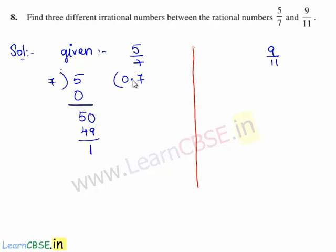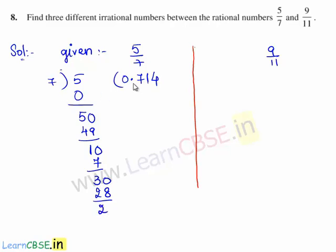Since we have taken the decimal point, 1 becomes 10. 7 goes into 10 one time. The remainder we get is 3. Since we have the decimal point, 3 becomes 30. 7 goes into 30 four times. 7 times 4 is 28. The remainder is 2. Because of the decimal point, 2 becomes 20. 7 goes into 20 two times. So 7 times 2 is 14.